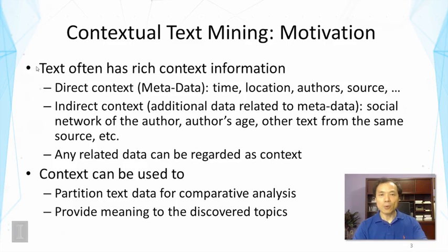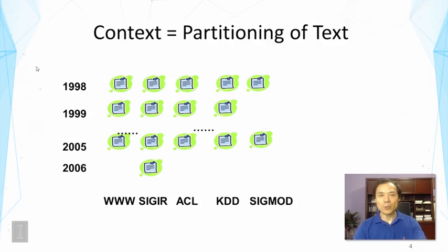Why is text context useful? Context can be used to partition text data in many interesting ways — almost arbitrarily as we need. This is very important because it allows us to do interesting comparative analysis. It also in general provides meaning to the discovered topics if we can associate the text with context. Here is an illustration of how context can be regarded as interesting ways of partitioning text data.